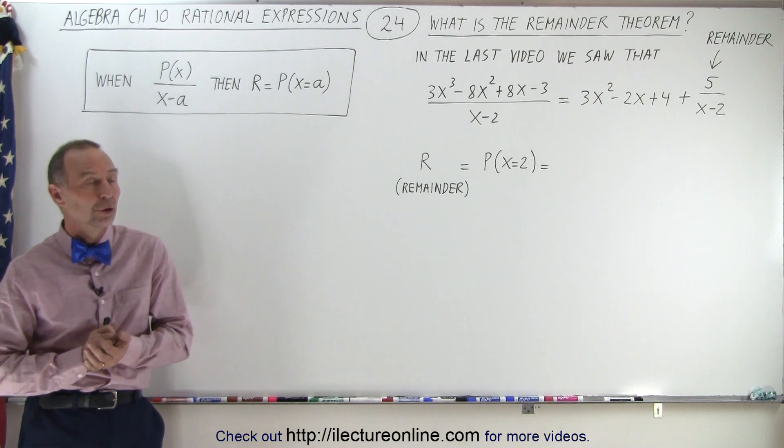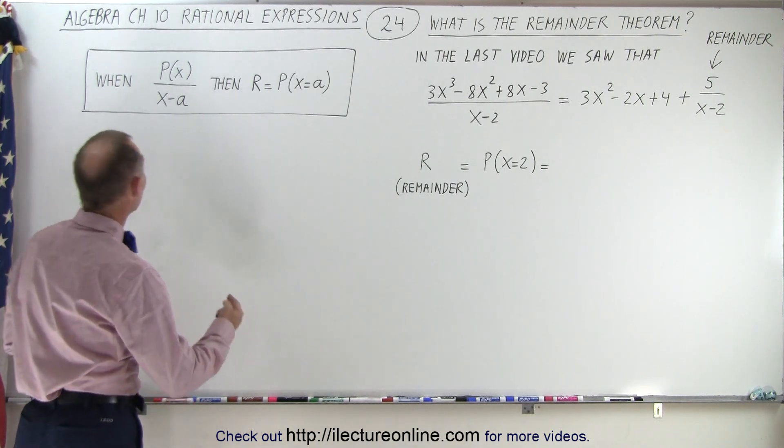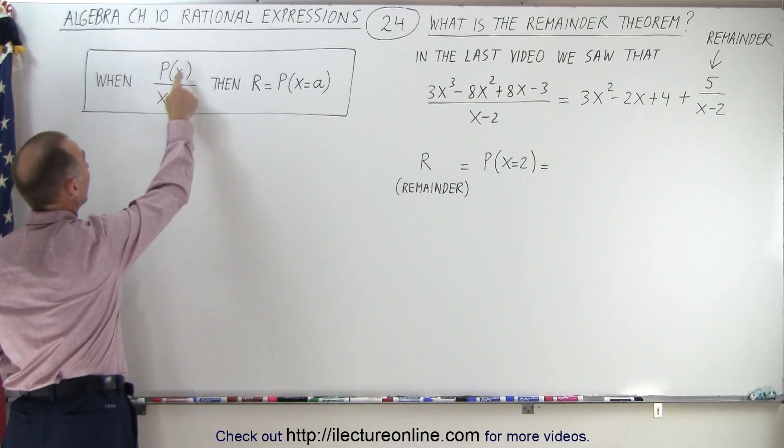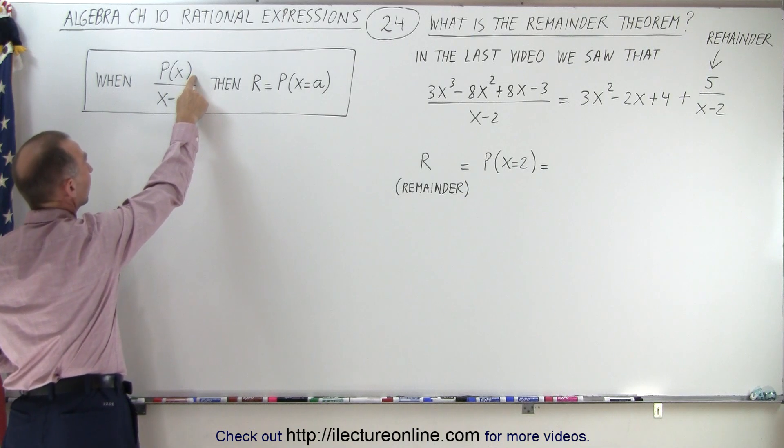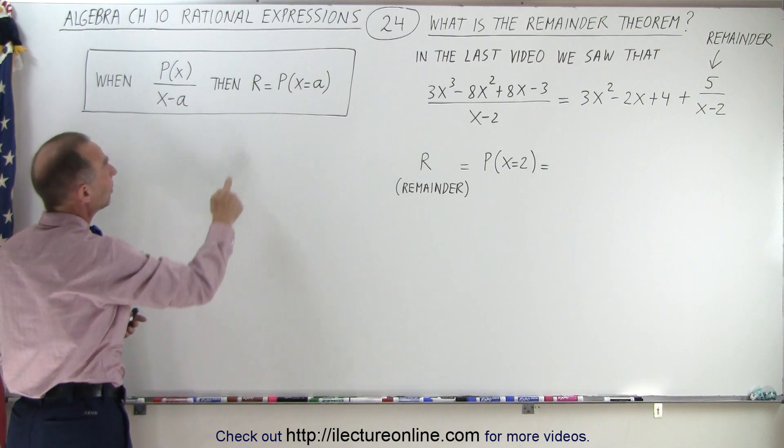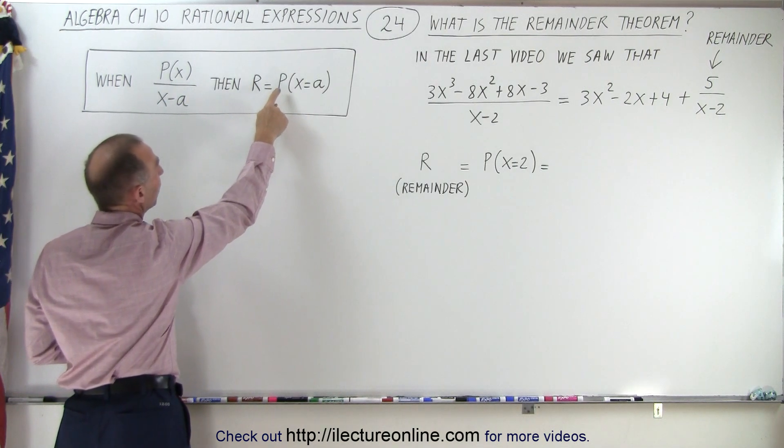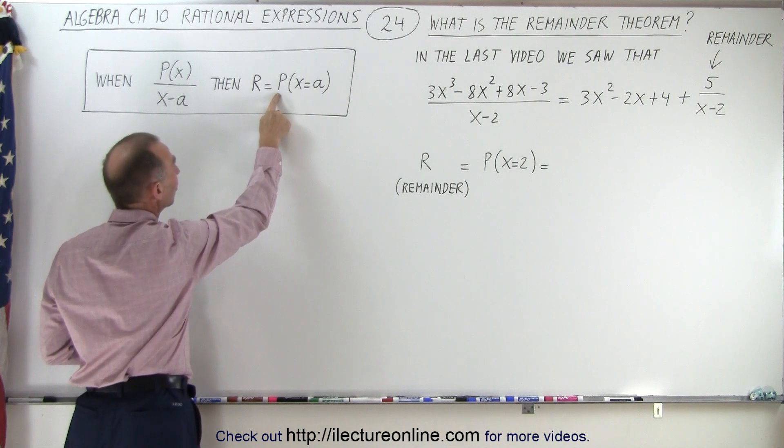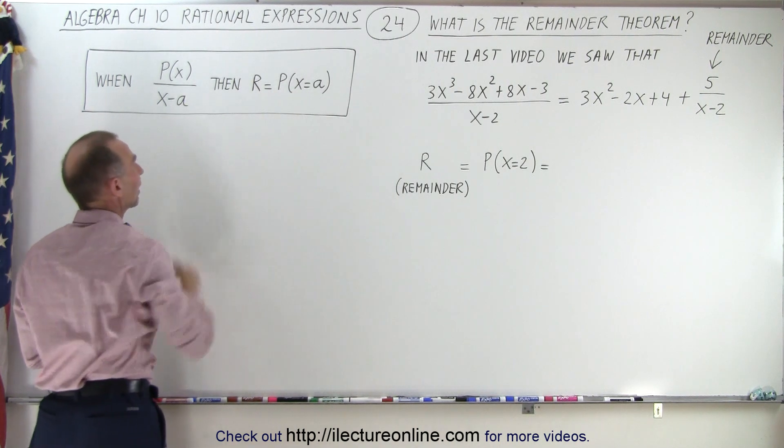Well, we have what we call the Remainder Theorem, which says that if we have a polynomial of the variable x and we divide by x minus some constant, then the remainder will be equal to the polynomial evaluated for x equal to the value of that constant.